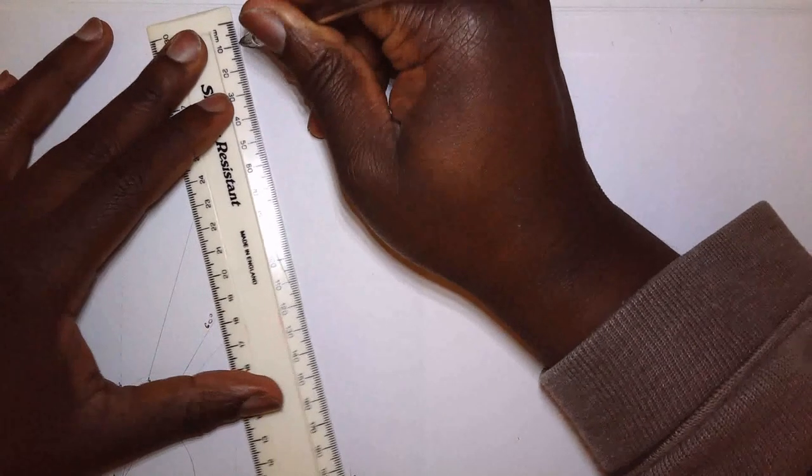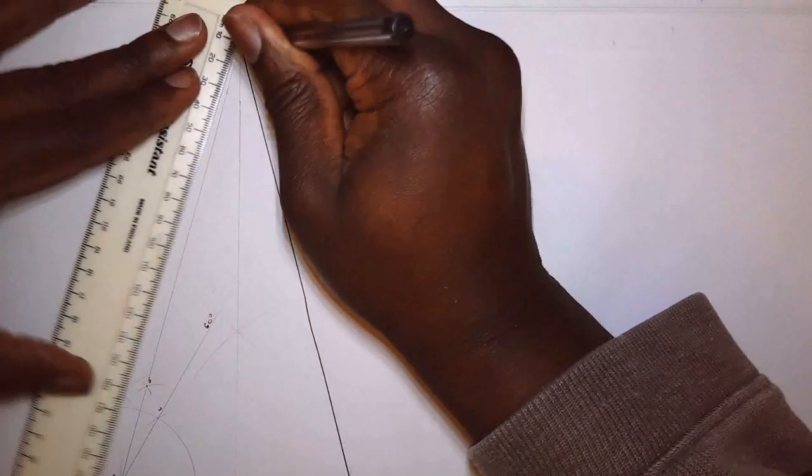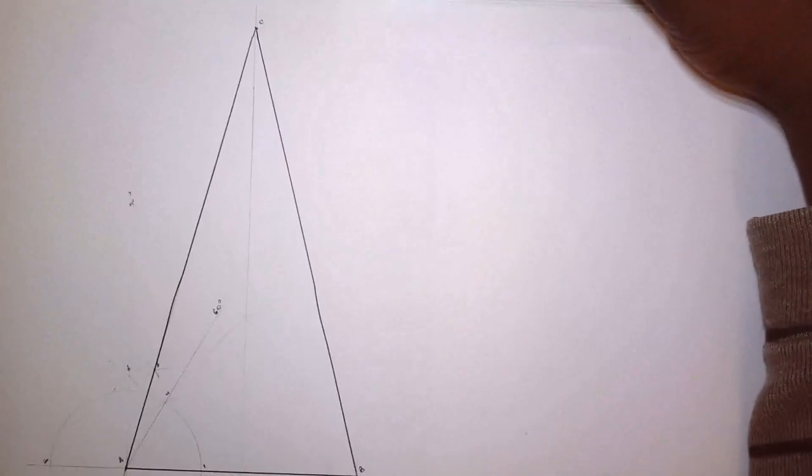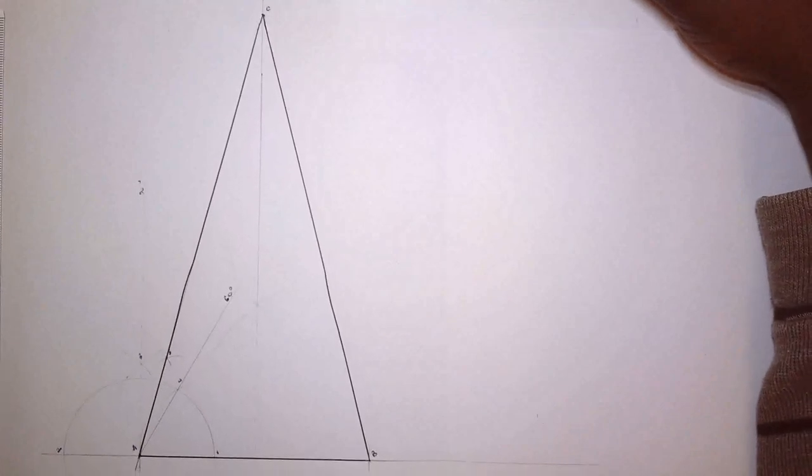And this is where point C is. So that is our C and all I have to do is just join C to B like so. And this gives us our triangle so let me see if we can just move the camera to bring everything in frame like so.